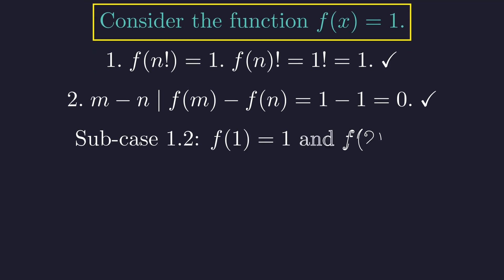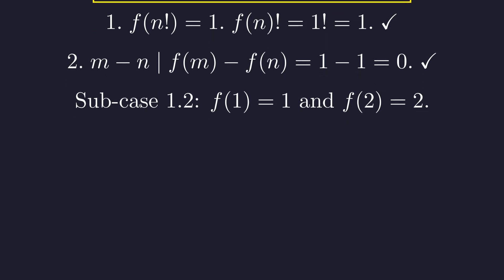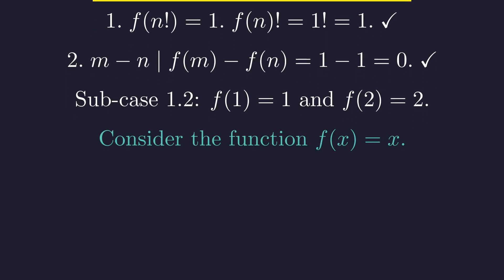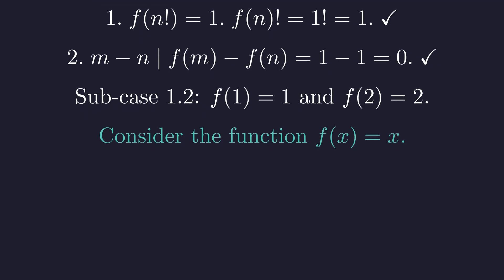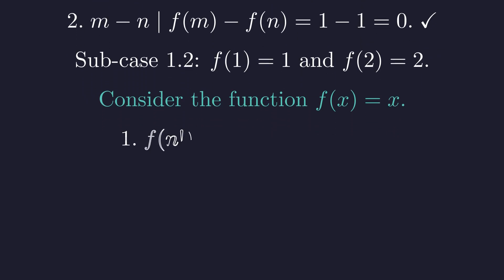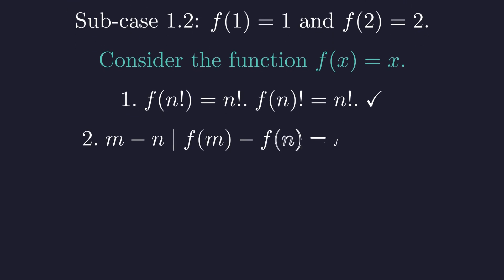Now for the second subcase, where f(1) = 1 and f(2) = 2. The simplest function fitting these values is the identity function f(x) = x. The first condition holds as both sides are n factorial, and the second holds as m minus n clearly divides itself. This gives us our second solution.